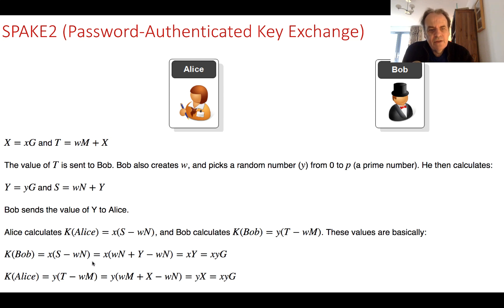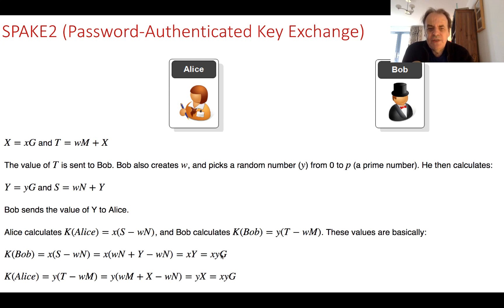This works because if we take S we get w*N plus Y, and then we subtract w*N — those cancel — so we just get Y, and Y is equal to y*g, giving us x times y times g.